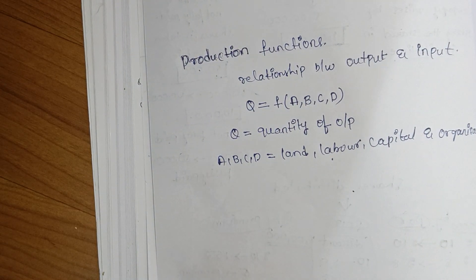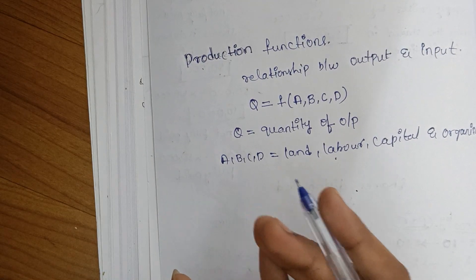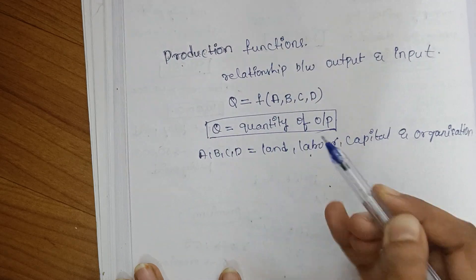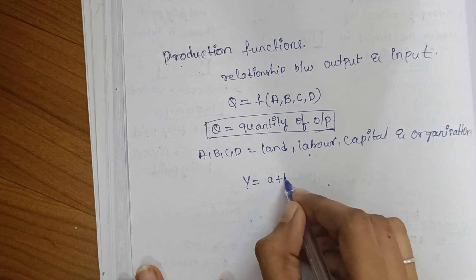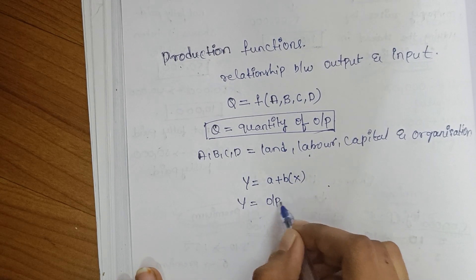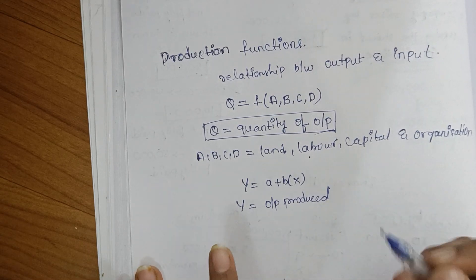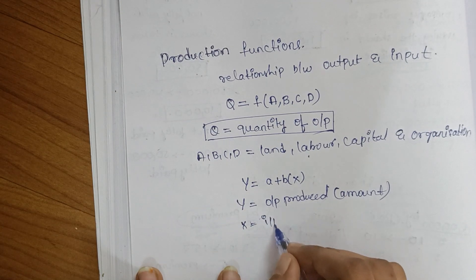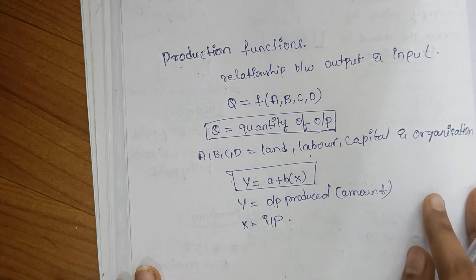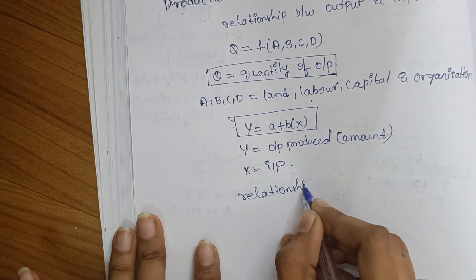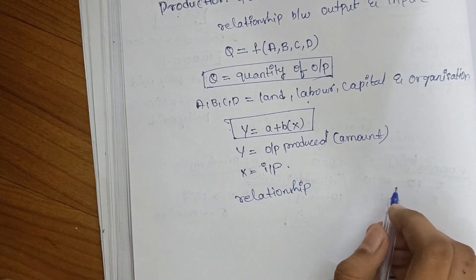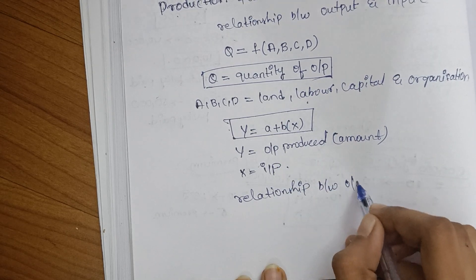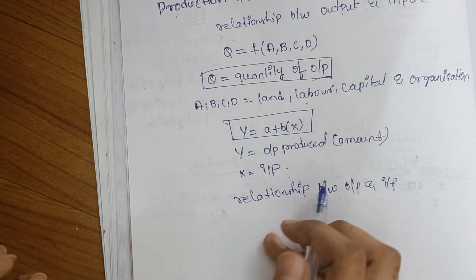In the first formula, how much output is given is not specifically shown — it only states quantity of output without mentioning the exact amount. So we use another formula: Y = a + bX, where Y is the amount of output produced and X is the input. This formula gives the relationship showing how much output is produced by using inputs like land, labor, capital, and organization.